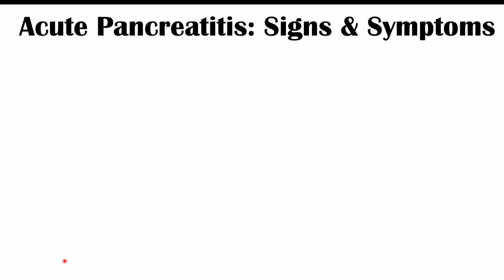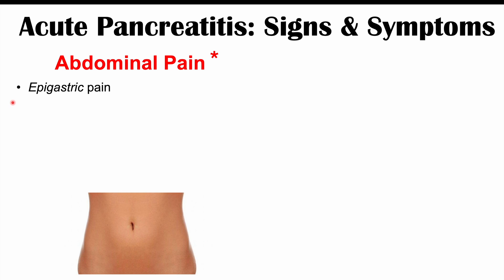The first and cardinal symptom of acute pancreatitis is abdominal pain. The pain occurs in the epigastric area — above the belly button, in the center — where the pancreas is located. It is often described as a dull ache, though in some cases it can be a sharp pain, which is often associated with gallstone pancreatitis.